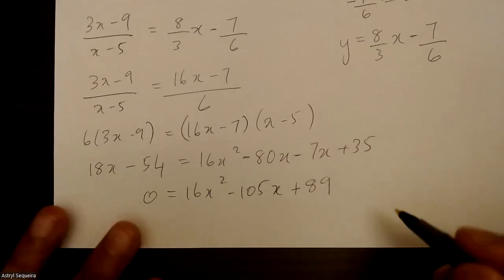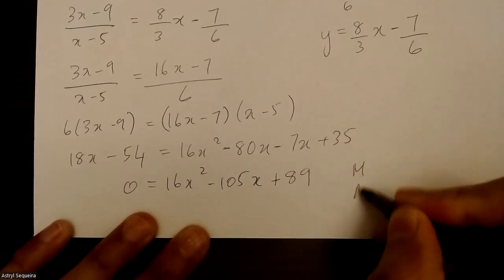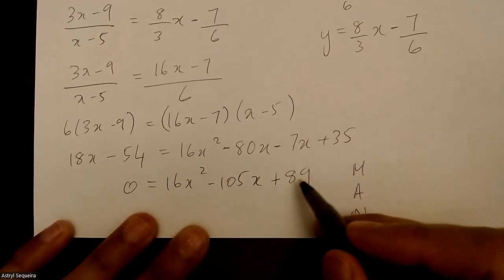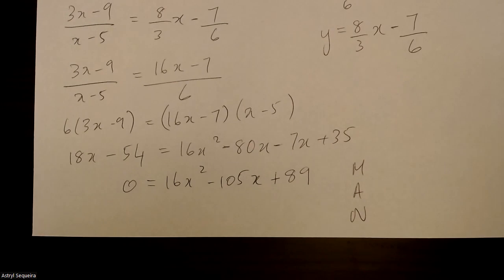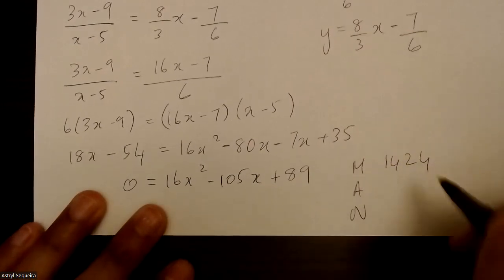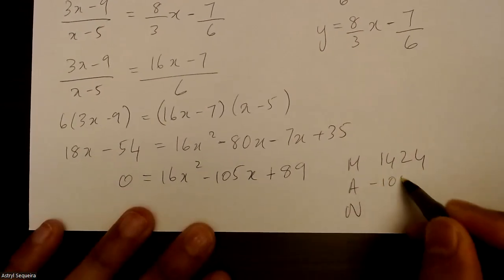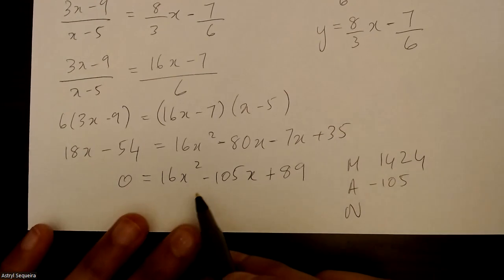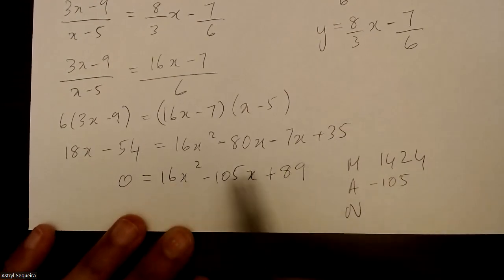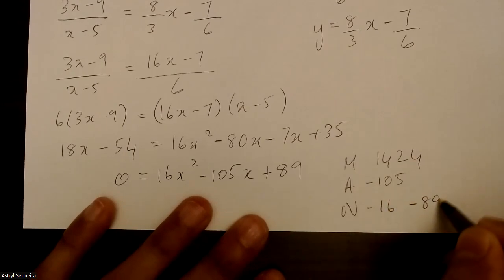Now you want to factor this. You can factor this with quadratic formula if the numbers are too hard for you. But this is pretty simple here too. So 89 times 16 is 1424. A is just negative 105. My two numbers, I always test out these two numbers when the numbers are really big. And guess what? It works out. It's just negative 16 and negative 89.